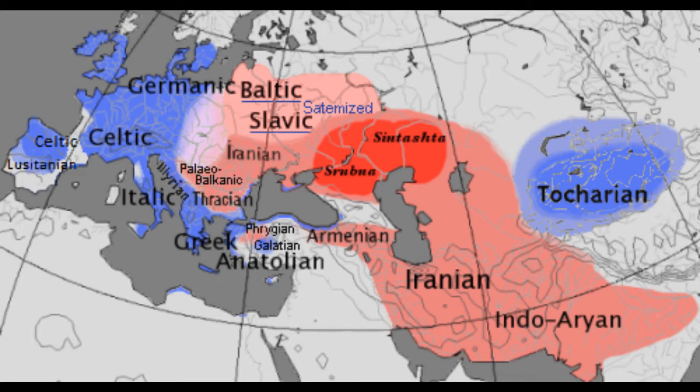The Srubnaya and Sintashta civilizations were proposed to be the point where satemization began. Sintashta were steppe herders, an early Indo-European offshoot. If you discount Armenians, then the R1b and R1b-influenced peoples are centum, and the R1a belonged to the satemized group.